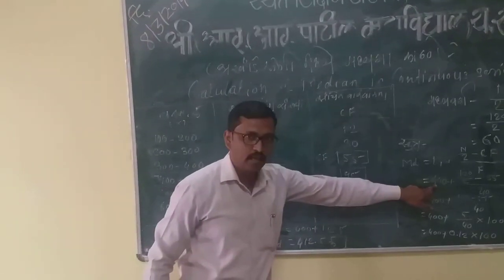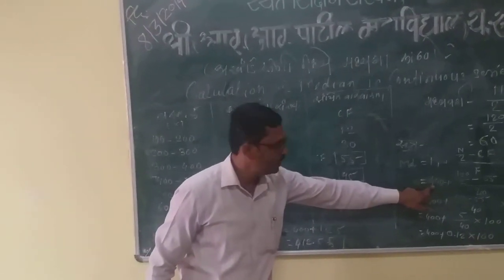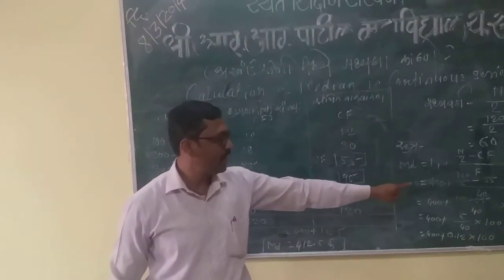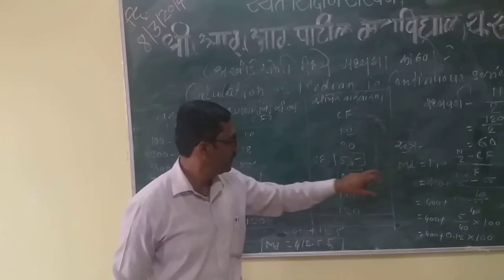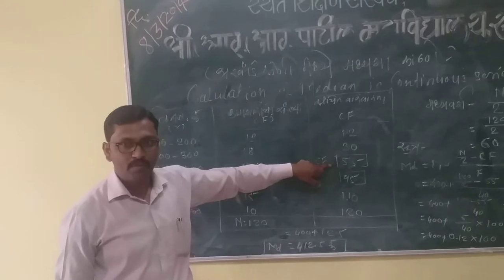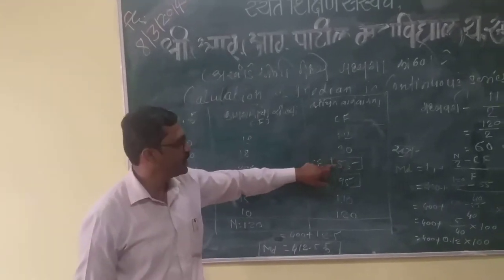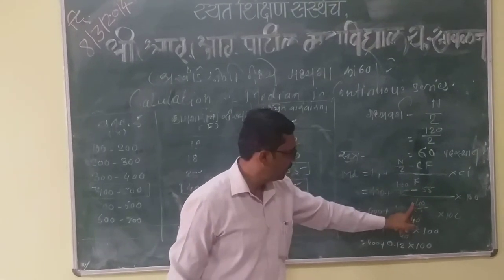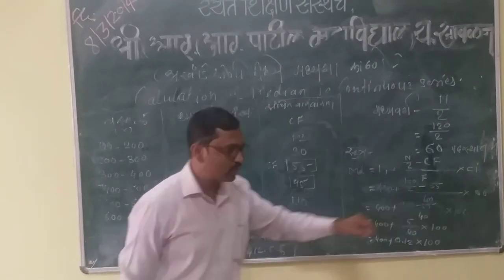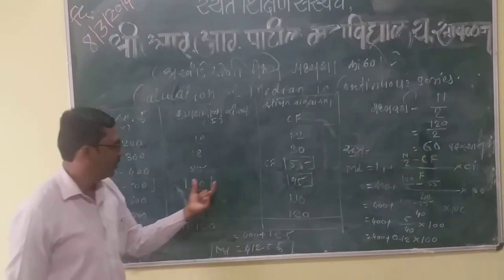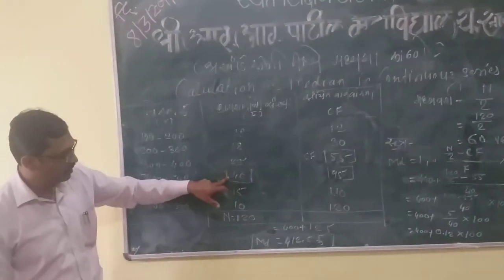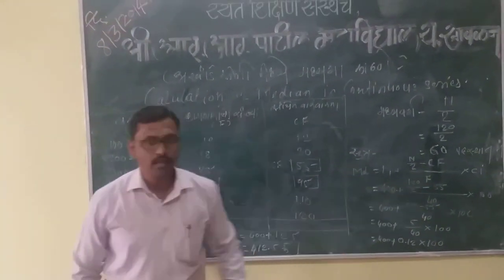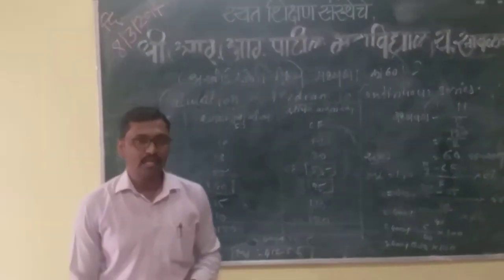We fill this value — 400 — then n is 120, divided by 2. CF, the cumulative frequency before the median class, is 55. We fill that in, then divided by 40, which is the frequency of our median class, and then multiplied by 100, our class interval.